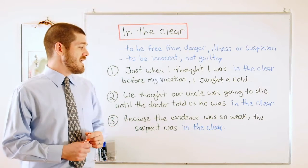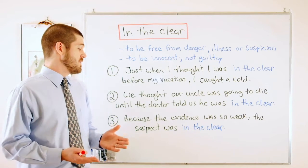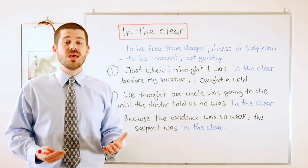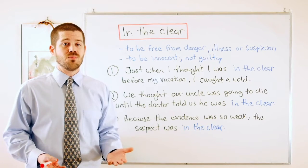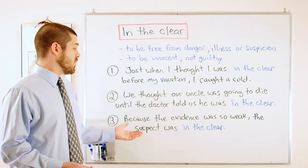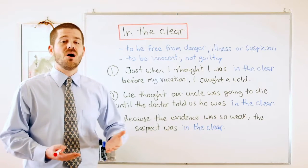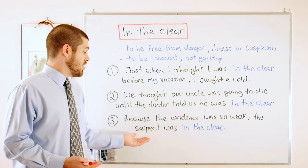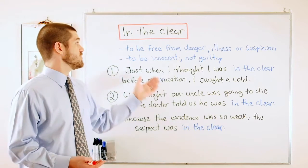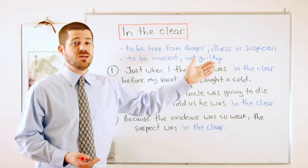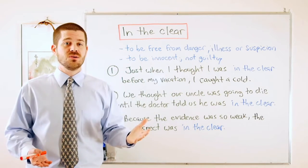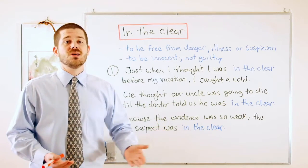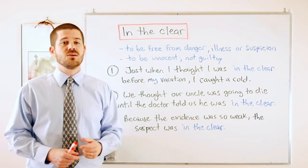One last example: 'Because the evidence was so weak, the suspect was in the clear.' Remember, a suspect is somebody we think committed a crime. So the evidence is weak — there's not very much proof that this person committed the crime — so the suspect is in the clear. They are free from suspicion, innocent or not guilty. There's not enough evidence to prove they did it.